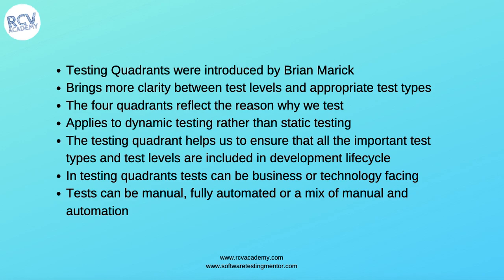These testing quadrants are applicable only for dynamic testing and not for static testing — keep that in mind for the ISTQB exam, as that may be a question. Testing quadrants help ensure that all important test types and test levels are included in the development lifecycle. In agile development, you have iterations, and these quadrants help ensure all necessary test levels and types are covered in each iteration. Test cases in these quadrants could be business-facing or technology-facing, and could be manual, automated, or a mix.